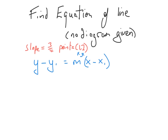Now let's look at the second situation: finding the equation of a line when we're not given any diagram — only the slope of the line and a point on the line. In that case, use the formula y minus y1 equals m into x minus x1. For that we need a point and a slope, which we have. We plug in the x1 and y1 values into the formula, and the slope goes in for m.